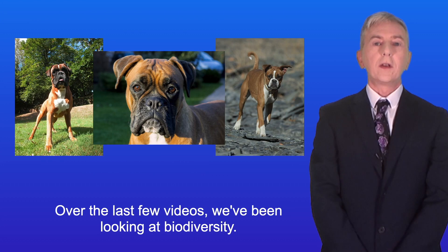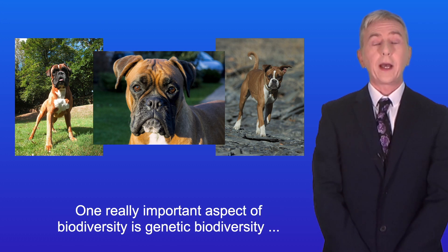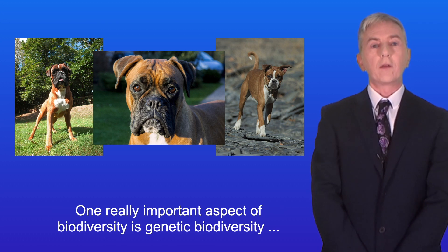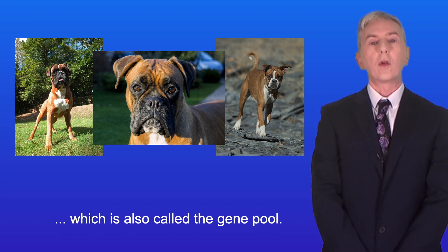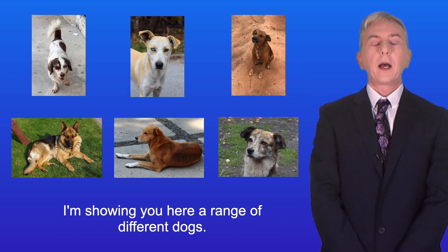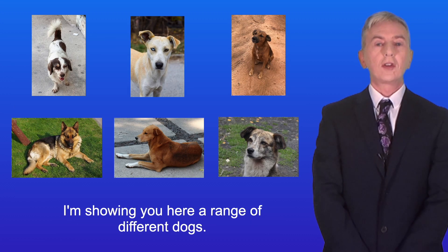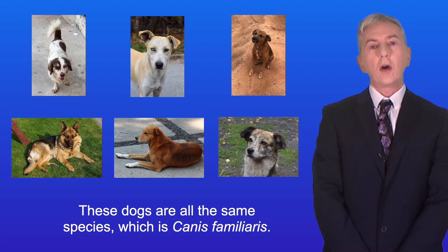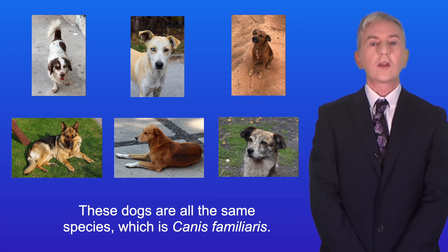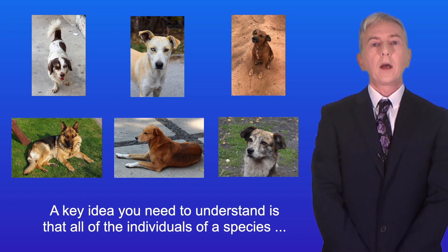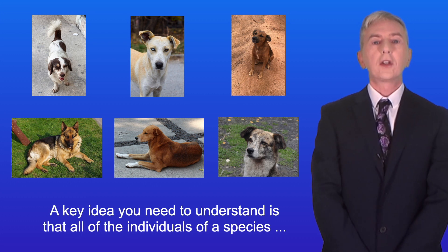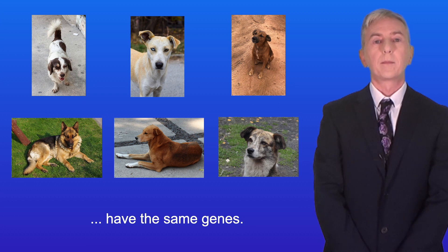Over the last few videos we've been looking at biodiversity. One really important aspect of biodiversity is genetic biodiversity, which is also called the gene pool. I'm showing you here a range of different dogs. These dogs are all the same species, which is Canis familiaris. A key idea you need to understand is that all of the individuals of a species have the same genes.